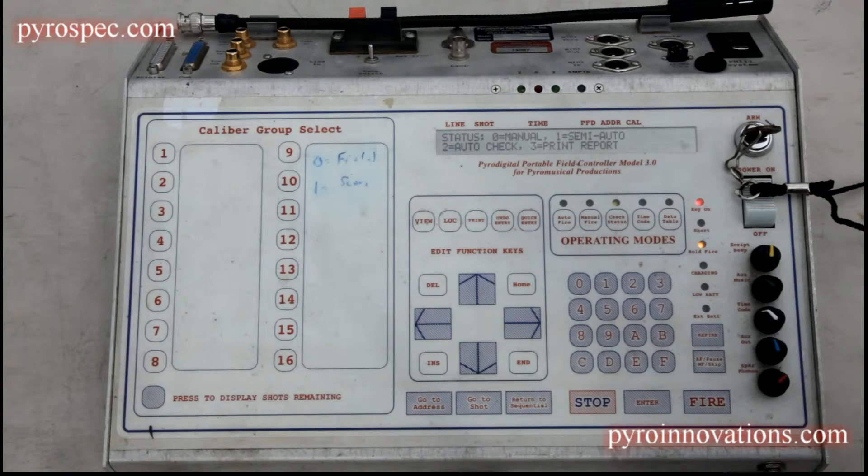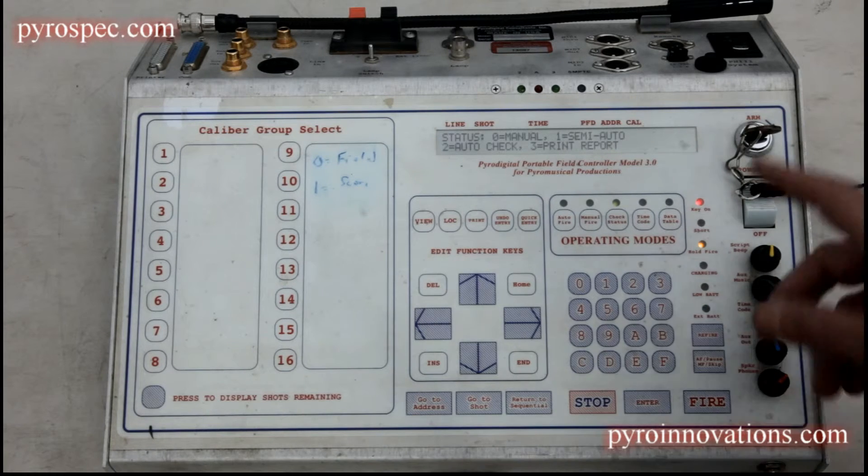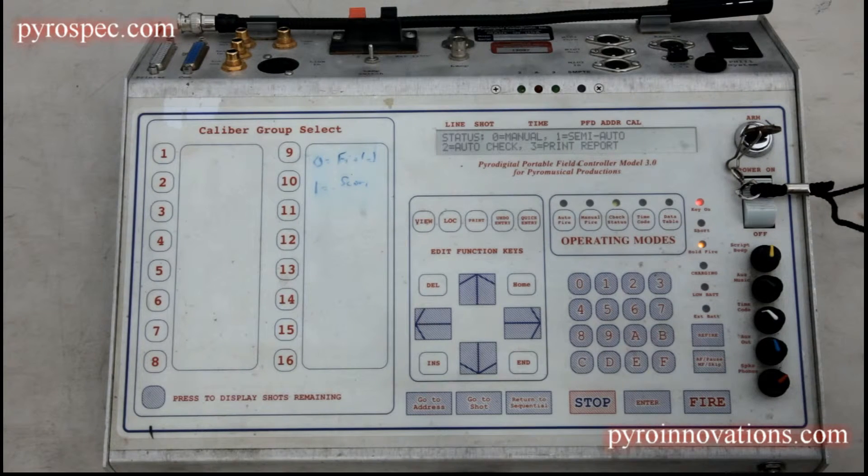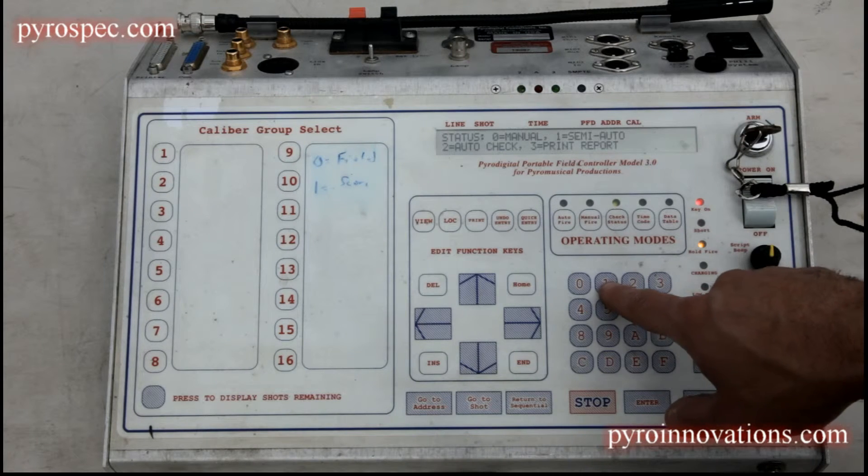So that's a quick way to run through all your modules if, say, you've already done a continuity check and you're just doing a triple check right before showtime. Otherwise, in most cases you're going to use the semi-auto mode.